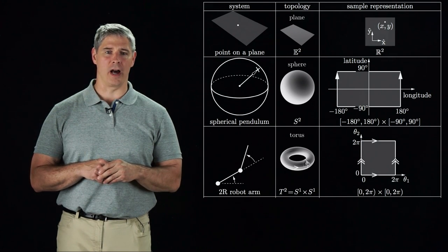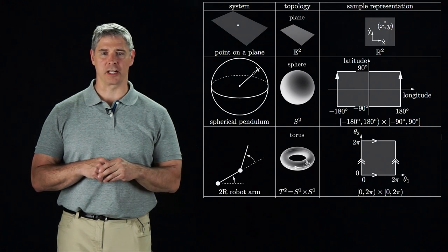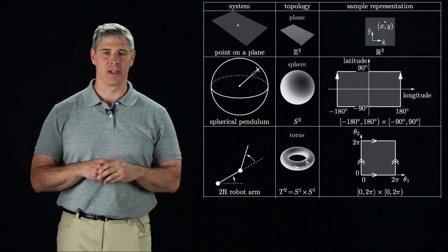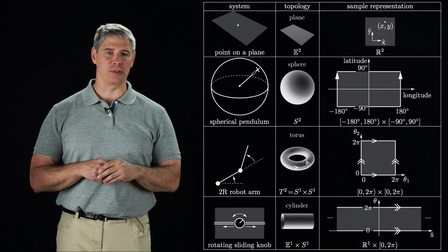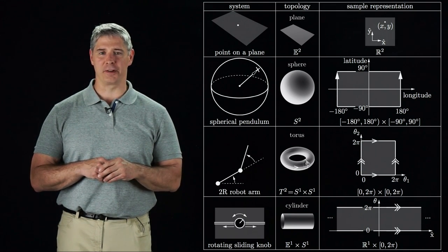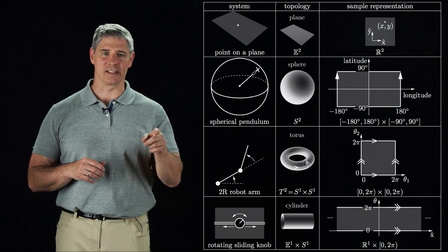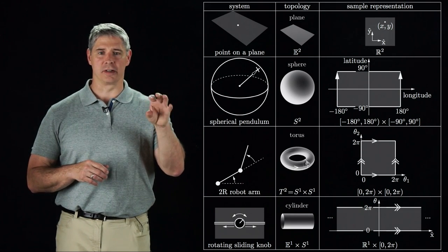The C-space of a 2R robot is a torus, and a configuration can be represented by two coordinates ranging from zero to two pi. And finally, the C-space of a rotating sliding knob is a cylinder, and a configuration can be represented by one real number representing the sliding distance, and one angle between zero and two pi.